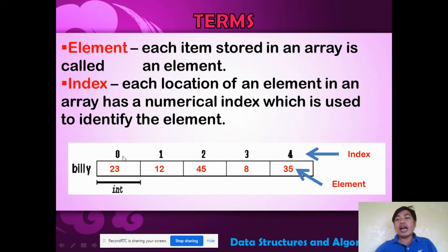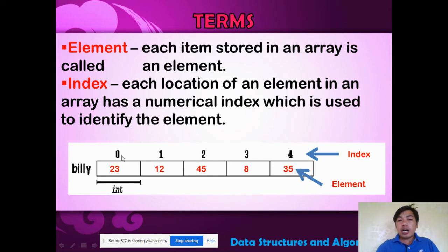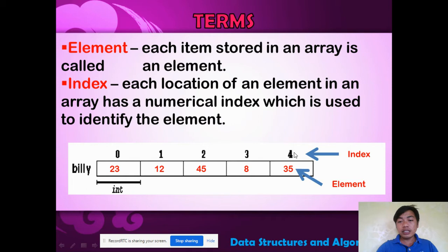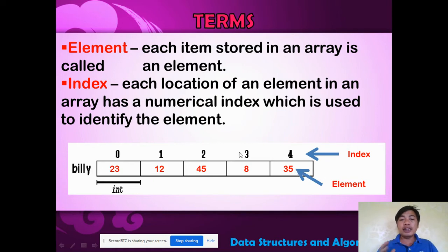Take note that an index always starts from zero. At index 0, the value is 23. At index 1, it is 12. Index 2 is 45. Index 3 is 8. And the last one is index 4, which is 35. This array is of integer type, and the name of this array is Bili.